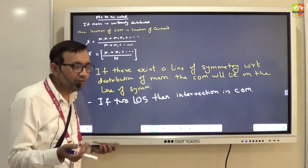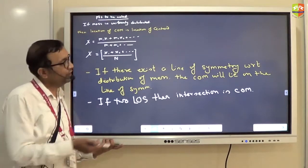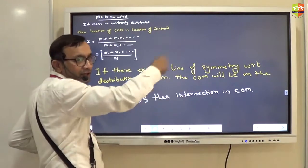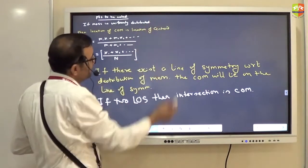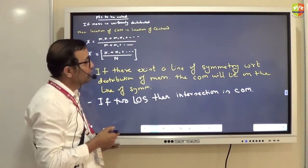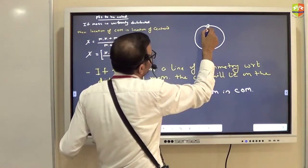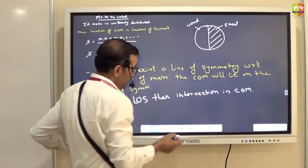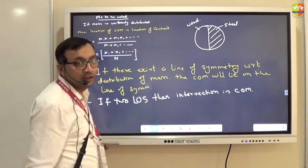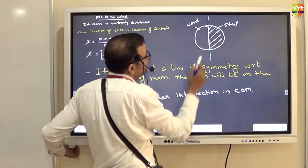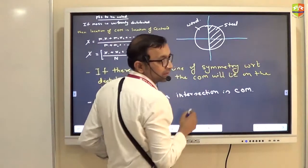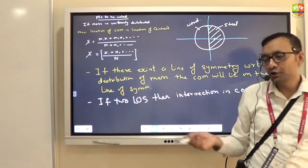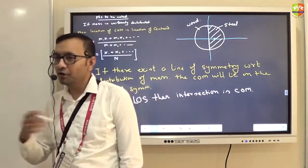For regular shapes you don't need to calculate. For example, for a rectangle like a television screen with uniformly distributed mass, you draw the two diagonals — those are lines of symmetry — and their intersection is the center of mass. But if half the object is steel and the other half is wood, then the mass distribution is not uniform. Do not look at the geometrical shape to find a line of symmetry; you must look at the distribution of mass.